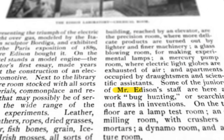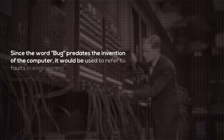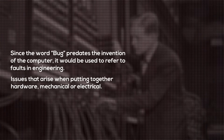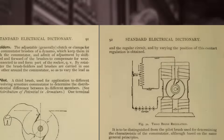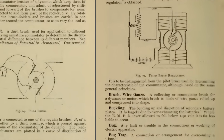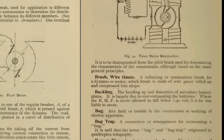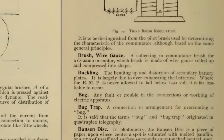Many reporters would point this out in articles and even specified Edison's use of the word 'bug.' However, since this predates the invention of the computer, the word most often referred to faults in engineering — issues that arise when putting together hardware, mechanical or electrical. The word made appearances from then onwards, even in official dictionaries, defining it as a fault in any electrical apparatus, or specifically pointing toward issues with the quadruplex telegraph system.